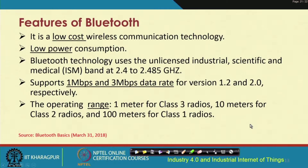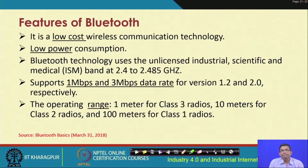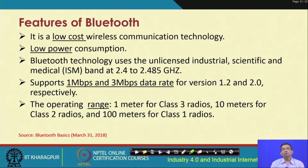Some features of Bluetooth: it offers low-cost wireless communication and low power consumption, which makes it attractive for IoT applications that are typically power-starved. It operates in the ISM 2.4 to 2.484 GHz band and supports data rates of 1 Mbps to 3 Mbps depending on the version — 1 Mbps in version 1.2 and up to 3 Mbps in version 2. The operating range is 1 meter for class 3 radios, 10 meters for class 2, and 100 meters for class 1 radios.